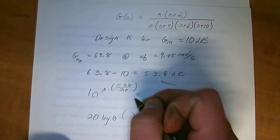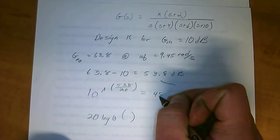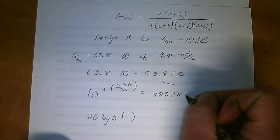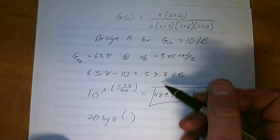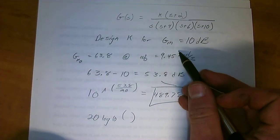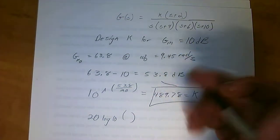So 53.8, if you solve this out, you'll end up with 487.78 equal to K. And that is the K you need in order to get a gain margin of 10 dB. Very simple.